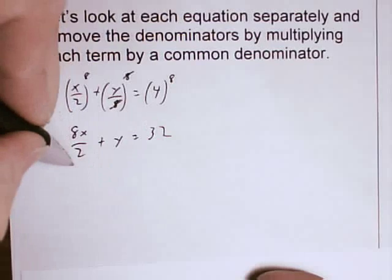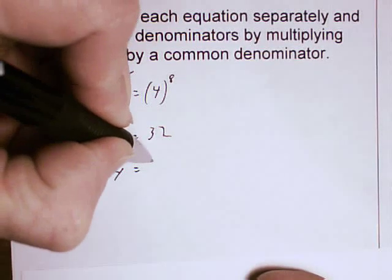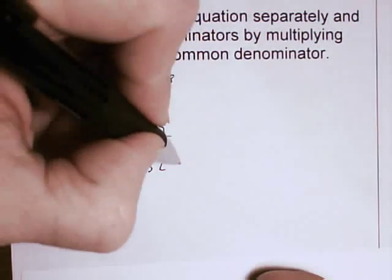8 divided by 2 is 4, so I have 4x plus y equals 32. I'm going to call that equation 2.